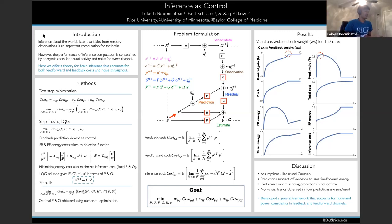So I'm going to be talking about inference as control. The premise of this is that sensory observations about the world are invariably ambiguous and the inference about the world's latent variables is an important computation for the brain. However, computational constraints limit the performance of this computation, and these constraints include energetic costs in terms of neural activity and noise across the channel.